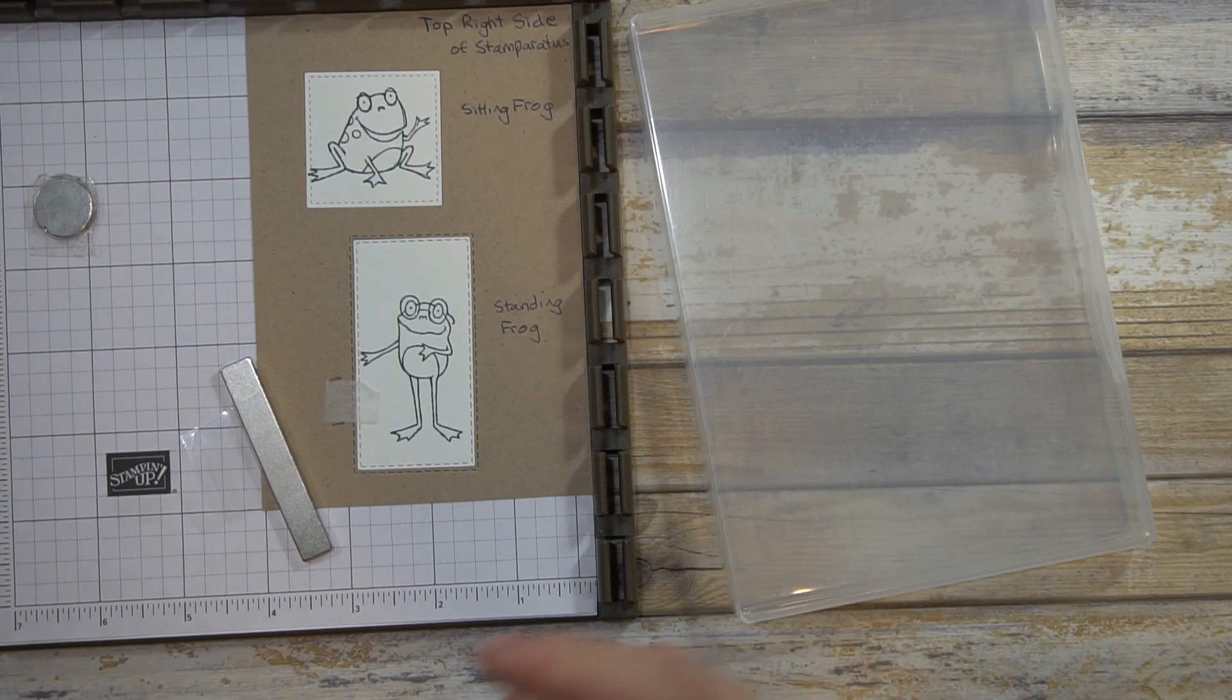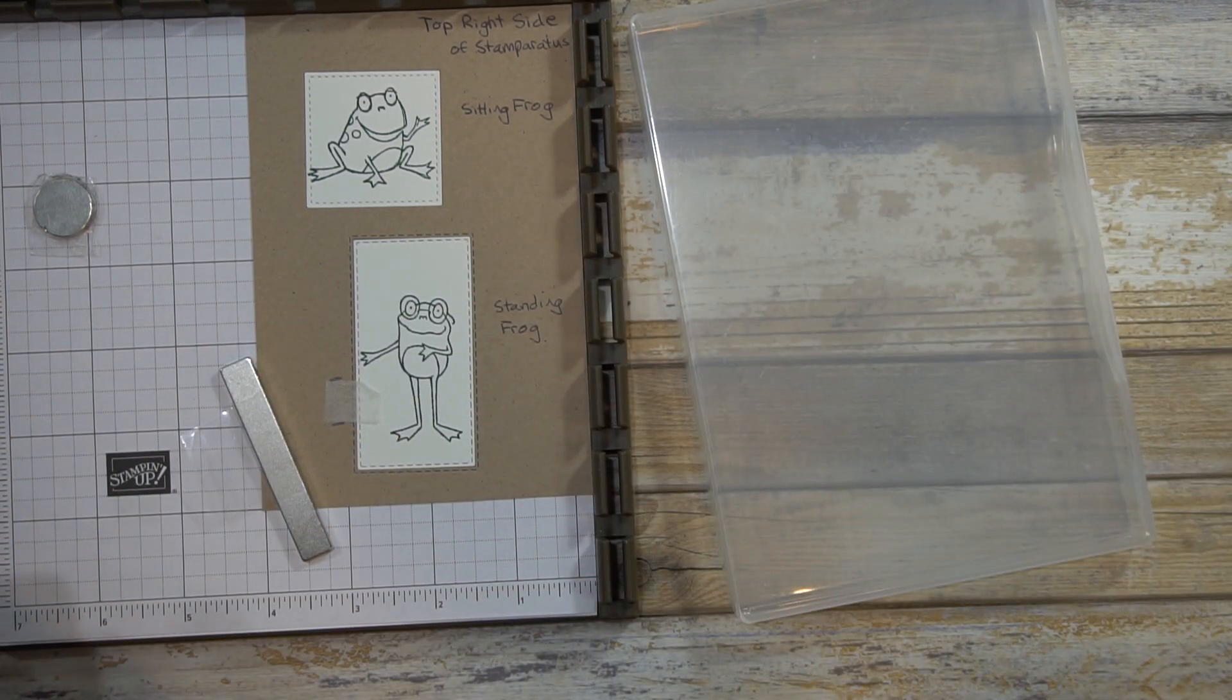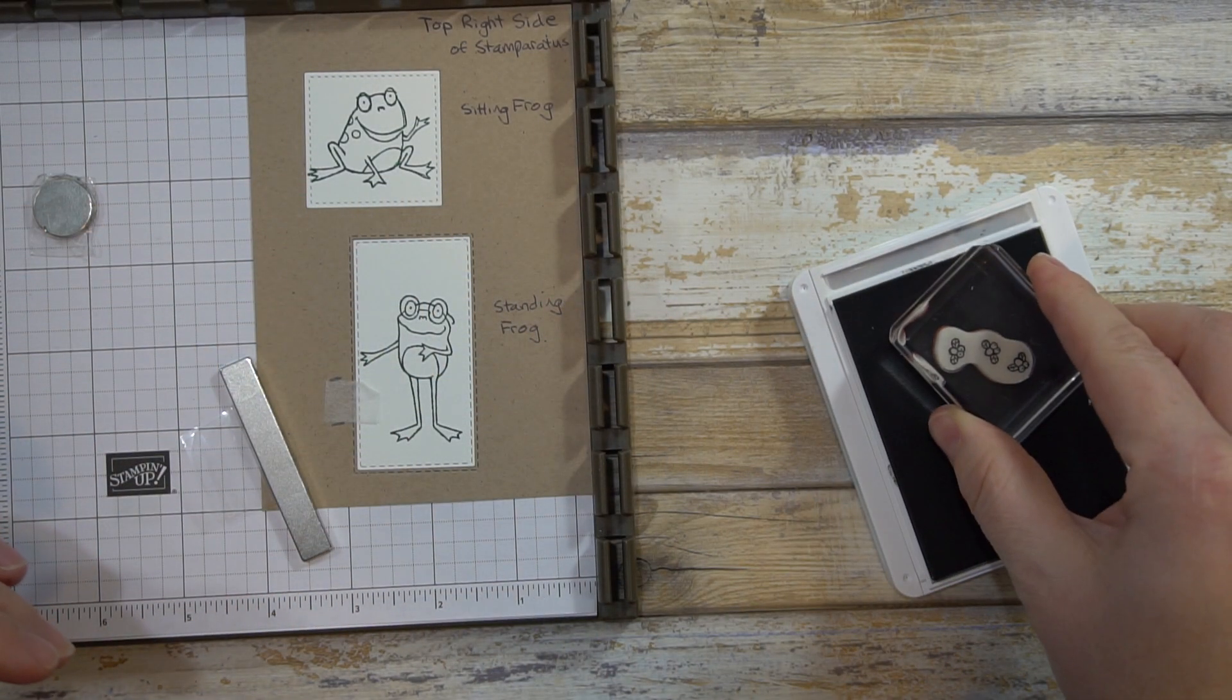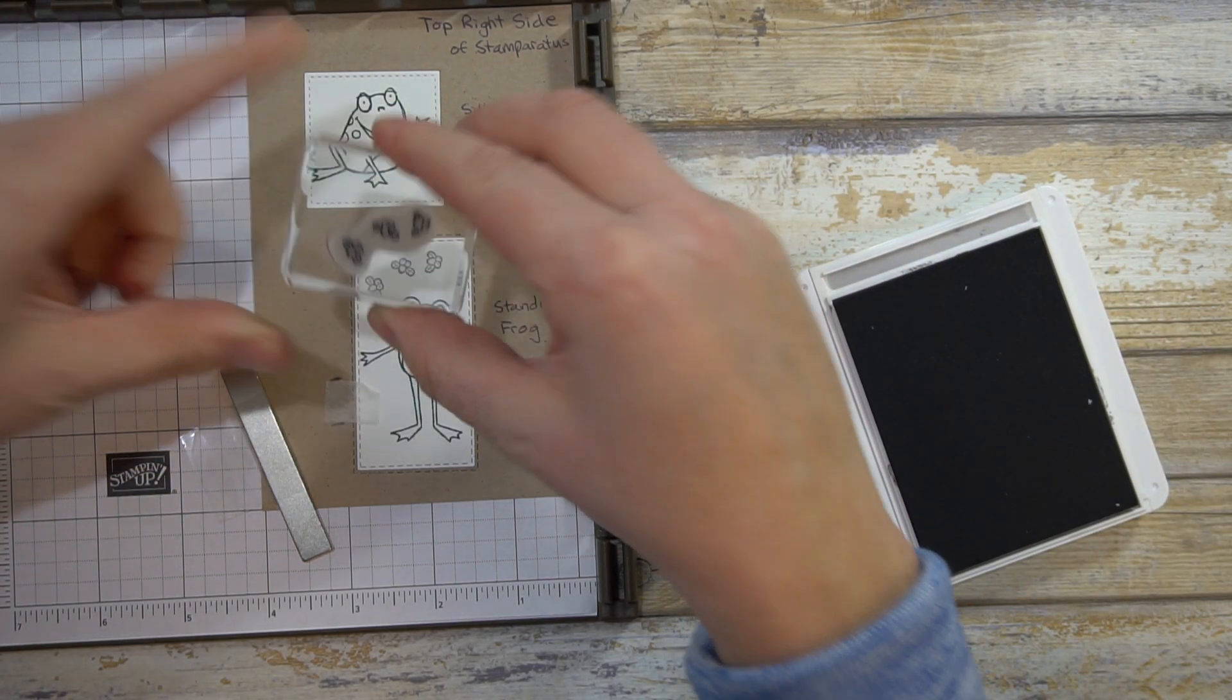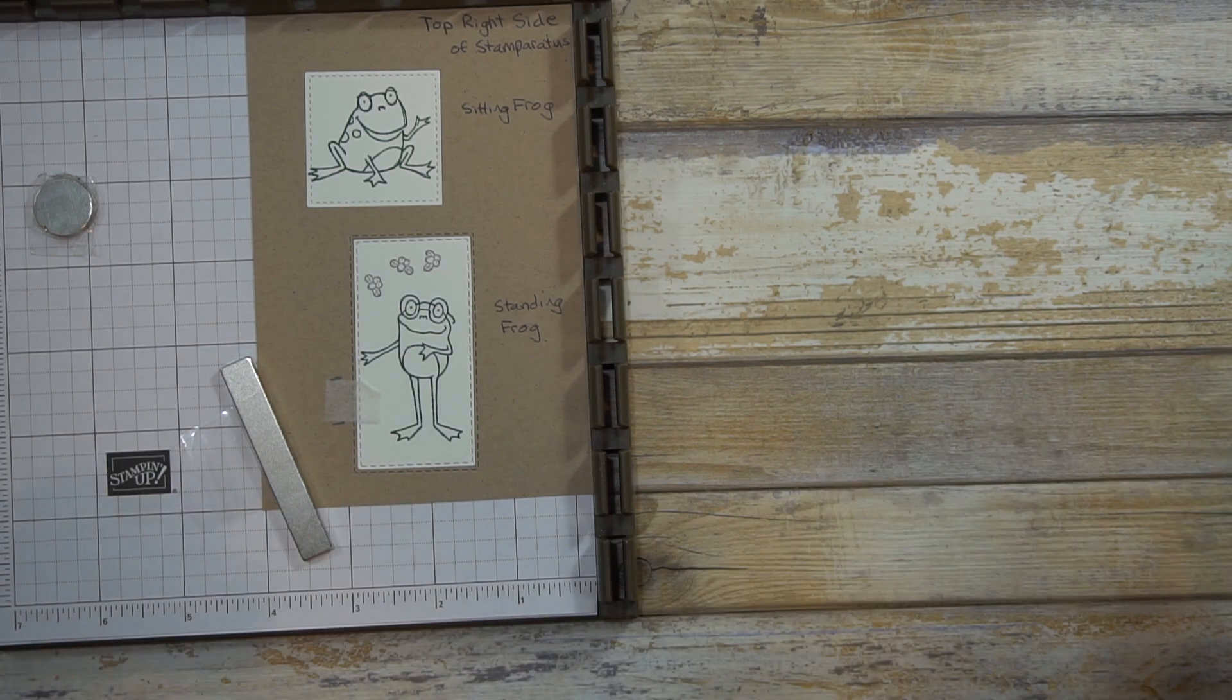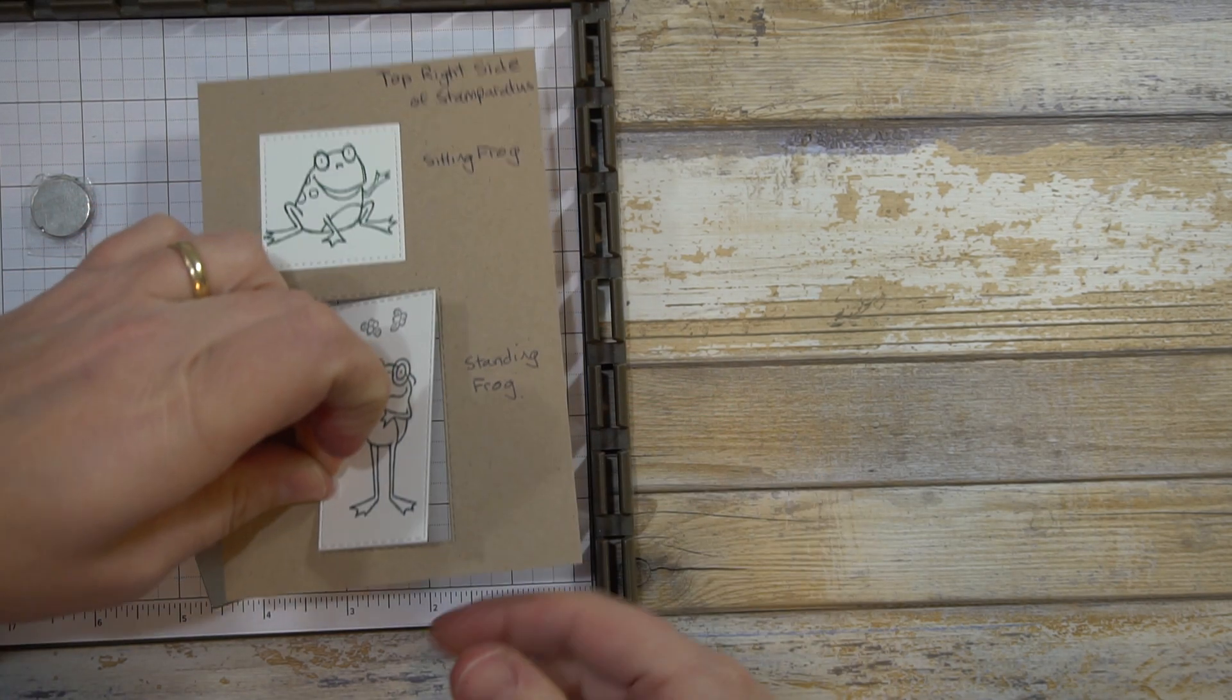I will go ahead and stamp the little flies. I'm just going to leave it in the Stamparatus even though I'm not going to be using the Stamparatus—it will just hold it still. They're so cute, those little bugs. This whole set is just adorable. I really enjoy it. If you have not gotten it, you should while it's still available.